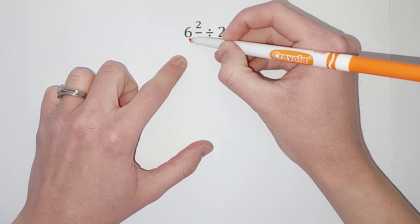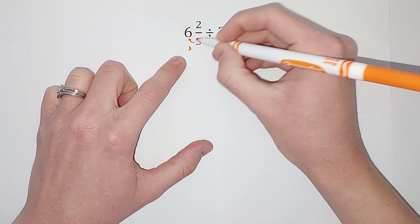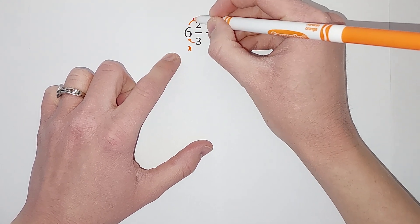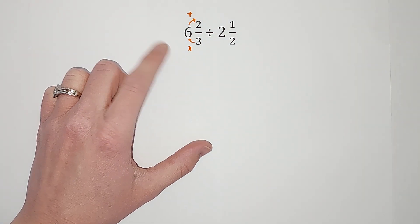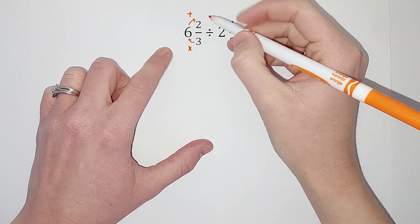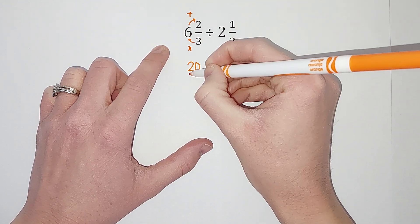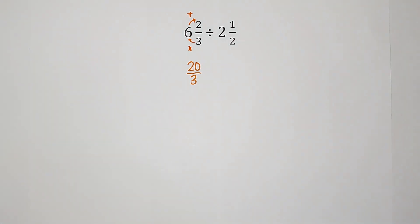To turn this into an improper fraction we take our denominator, we multiply it by our whole number. So six times three gives me 18, and then we add what's in the numerator. So three times six gives me 18 plus two gives me 20, and this is still over three. If that felt complicated, the more you do it the more you'll get used to it and it'll just kind of become second nature to you.